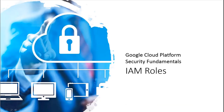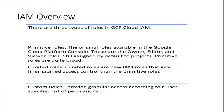Let's move on and talk about IAM roles. In Identity and Access Management there are three types of roles: primitive, predefined (or curated), and custom. Primitive roles are the original GCP roles and are very loose — not very granular. For example, you might be granting access to all permissions in a project or all permissions on App Engine or Cloud SQL.